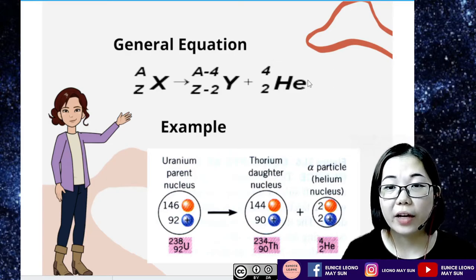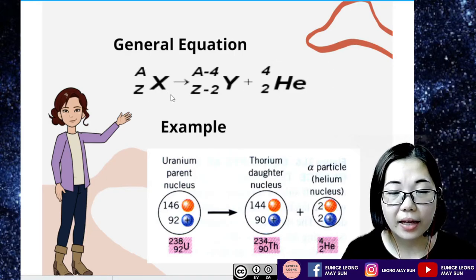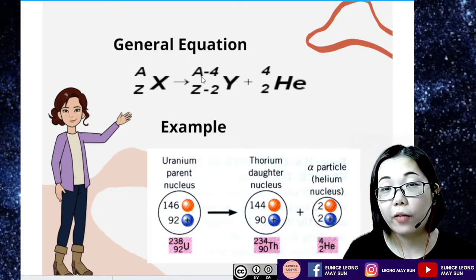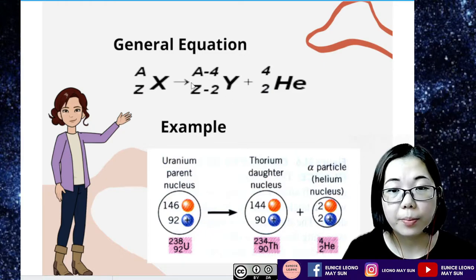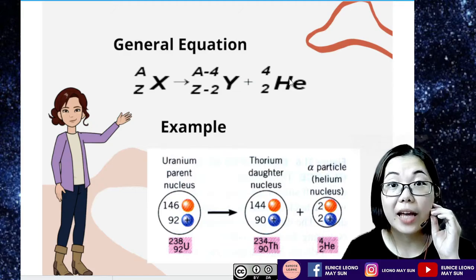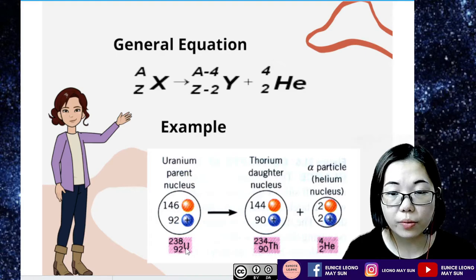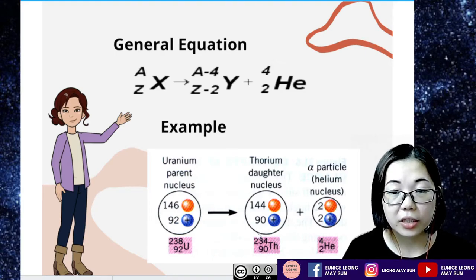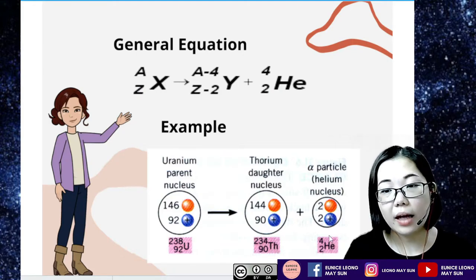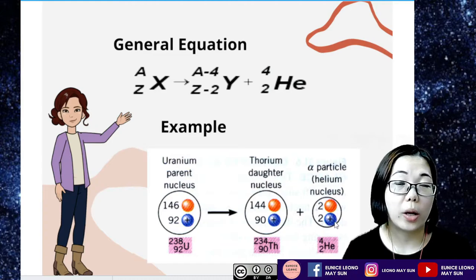So the general equation for alpha decay or alpha radiation is xAz, whereby this is the parent nucleus. The daughter nucleus will have A minus four in the atomic mass number and the proton number will have Z minus two plus alpha particle is being emitted out. So example is here, uranium-238-92, it will actually decay to become thorium-234-90 and also emitting out an alpha particle of helium-4-2. So this is the general equation for alpha decay.